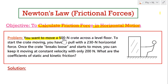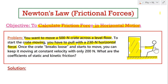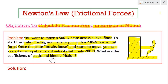Problem: you want to move a 500 Newton crate across a level floor. To start the crate moving, you have to pull with a horizontal force of 230 Newton. Once the crate breaks loose and starts to move, you can keep it moving at constant velocity with only 200 Newton. What are the coefficients of static and kinetic friction?